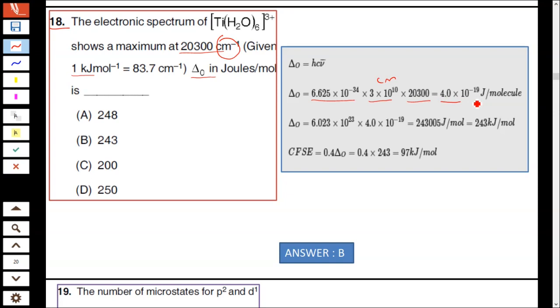The frequency is 20,300 cm⁻¹, so it is 4.0 × 10⁻¹⁹ Joules. For one mole, multiply by Avogadro's number: 6.023 × 10²³ × 4.0 × 10⁻¹⁹, which gives 243 kilojoules per mole. The answer is 243 kilojoules per mole.